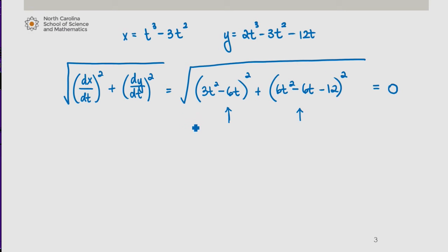Another way of looking at it is I could square both sides of this equation. That would ultimately give me (3t² - 6t)² + (6t² - 6t - 12)² = 0.